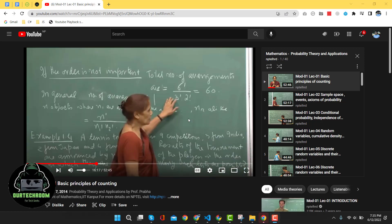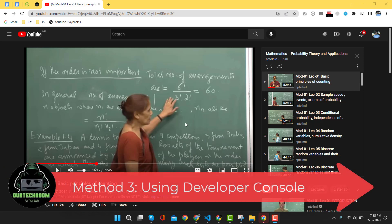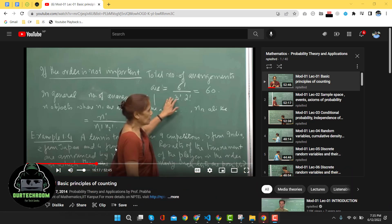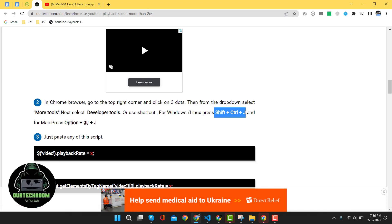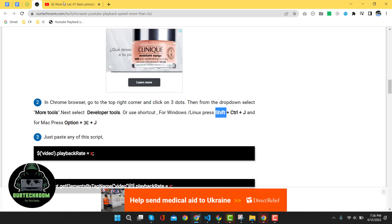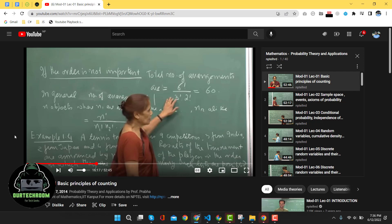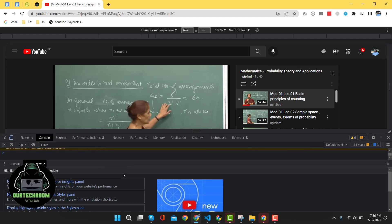Now the third method is using the browser developer console. If you just need to control the playback speed for a single video, you can try this method. First, open the developer console. The instructions say to press Ctrl+Shift+J. Come to the video and press Ctrl+Shift+J — this will open the developer console.